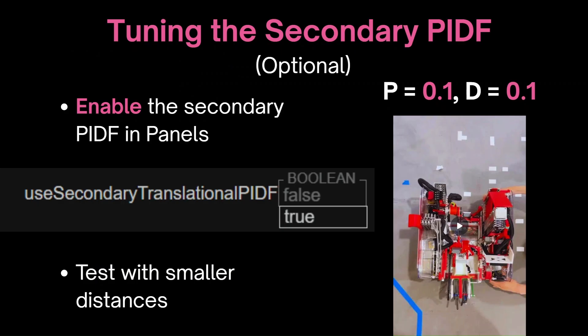If you don't have a dual PID system, then you're done with tuning this PIDF, and you can move on to tuning the heading PIDF. Otherwise, if you do have the dual system enabled, then we'll have to move on to tuning the secondary PIDF. It's important to note to double check that the boolean to use this is set to true. Otherwise, the robot's movements won't reflect the changes made through panels.